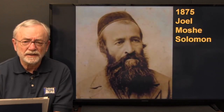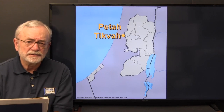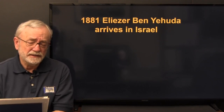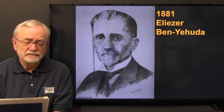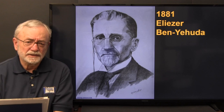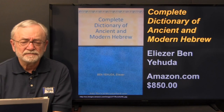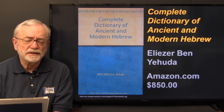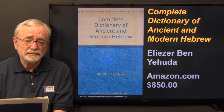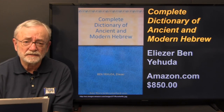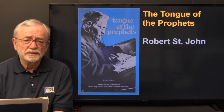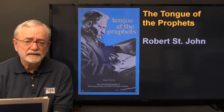In 1878, Petah Tikva was founded by Joel Moish Solomon. Then in 1881, a very significant event: Eliezer Ben Yehuda arrived in Israel. Ben Yehuda was a philologist who believed the language of the nation was as important as the blood, sweat, and tears poured into it. During his career he completed four volumes of what became a 17-volume dictionary of ancient and modern Hebrew. It is due to Eliezer Ben Yehuda that we now have a modern Hebrew language. His life is described in the book Tongue of the Prophets by Robert St. John.